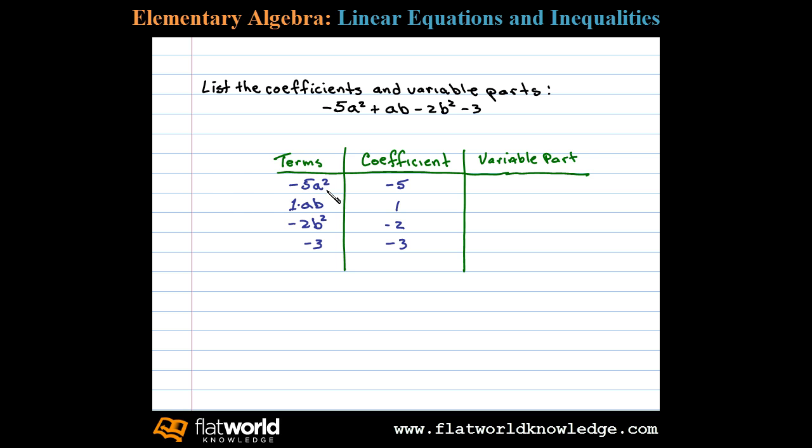and their exponents make up the variable part. Here the variable part is a², ab for this third term, and b² is the variable part. We'll talk more about the variable part of the constant term later. For now, we'll just leave that blank and say it has no variable part.